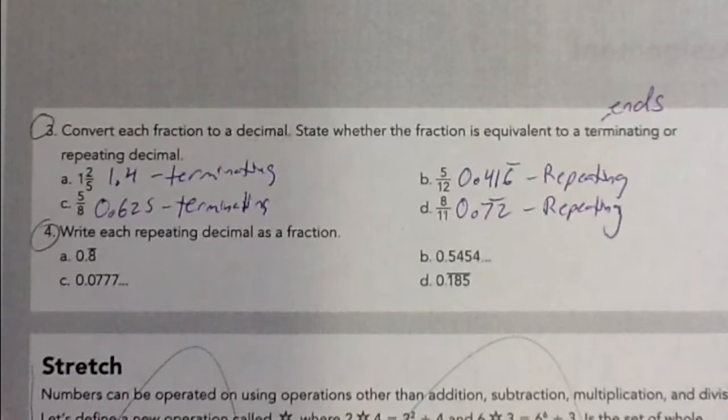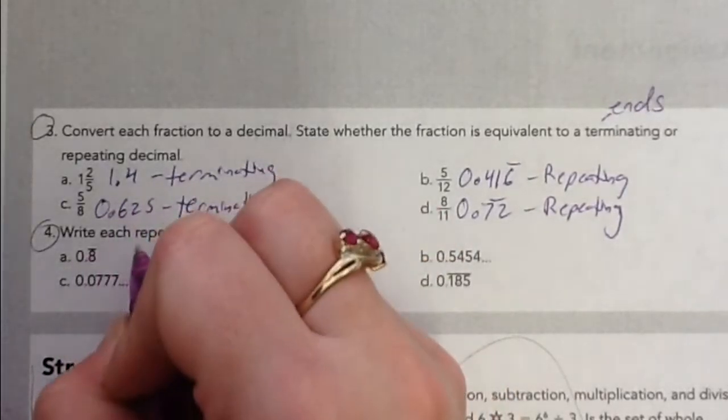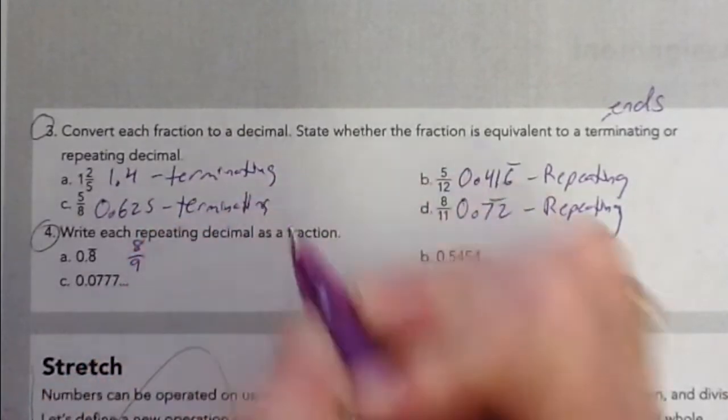Then for 4, we're going the other way. We're changing these repeating decimals into a fraction. With terminating decimals, you can put it over a power of 10. But with repeating decimals, there's this weird wonky thing where you can get to it by putting it over an equivalent number of nines of how many digits are repeating. For A, we have one digit repeating, just that 8. So we'll put 8 over a single 9.